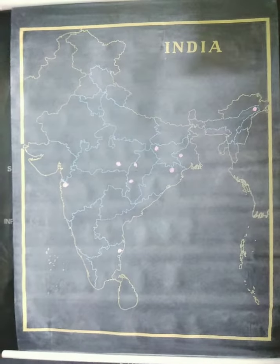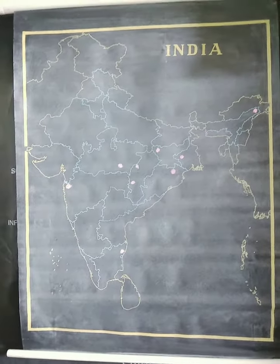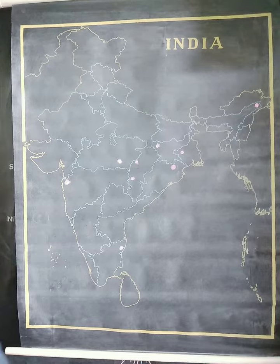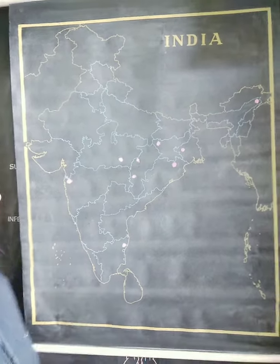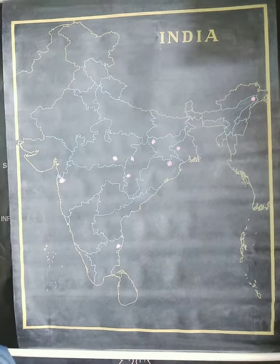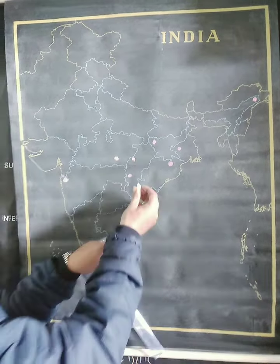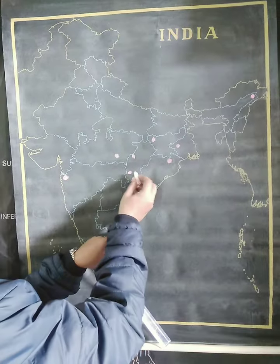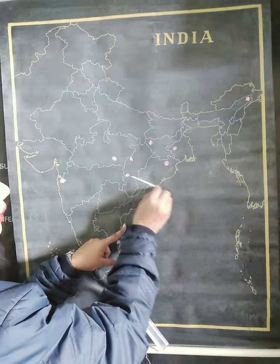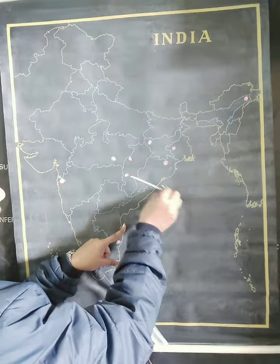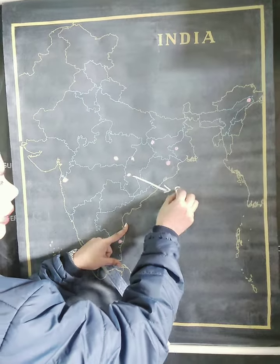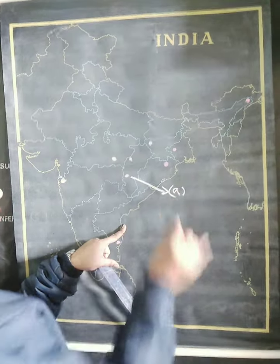Now let us see the locations of the different places. Your answer number one was Chhattisgarh. We were talking about the Durgapur iron ore mine, in the southern part of Chhattisgarh. Your answer number A is there.